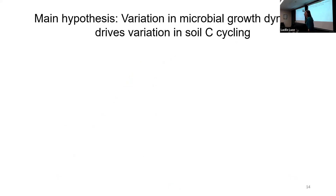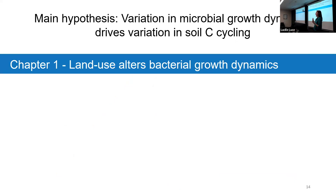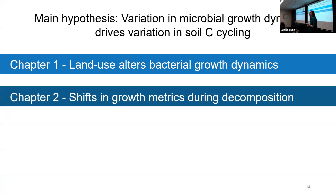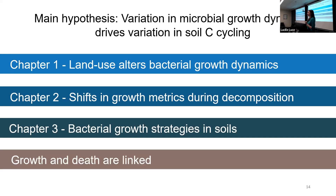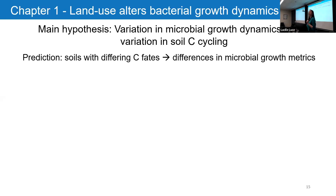Let's get into my experiments. My main hypothesis for all this work was that variation in microbial growth dynamics will drive variation in soil carbon cycling. In my first chapter, I looked at how different soils with differing carbon fate might differ in their bacterial growth dynamics. In the second chapter, I looked at how these growth metrics shift over the course of decomposition of plant litter. And in my third chapter, I tried to combine lessons from the first two and assess what bacterial growth strategies might exist in soils and what that means for carbon cycling.